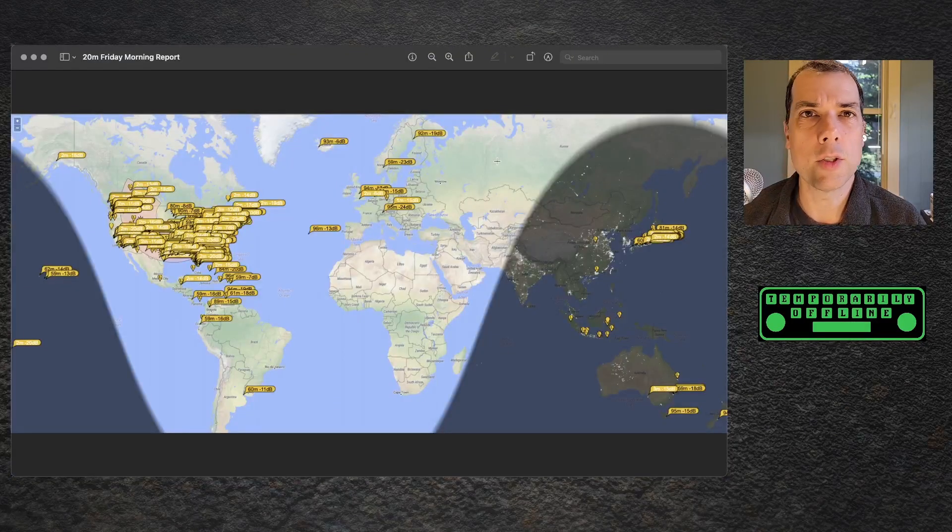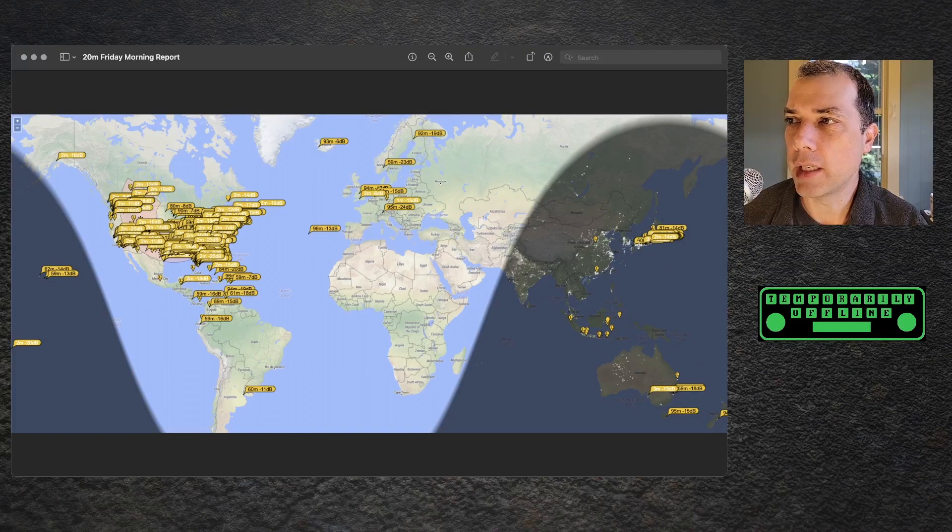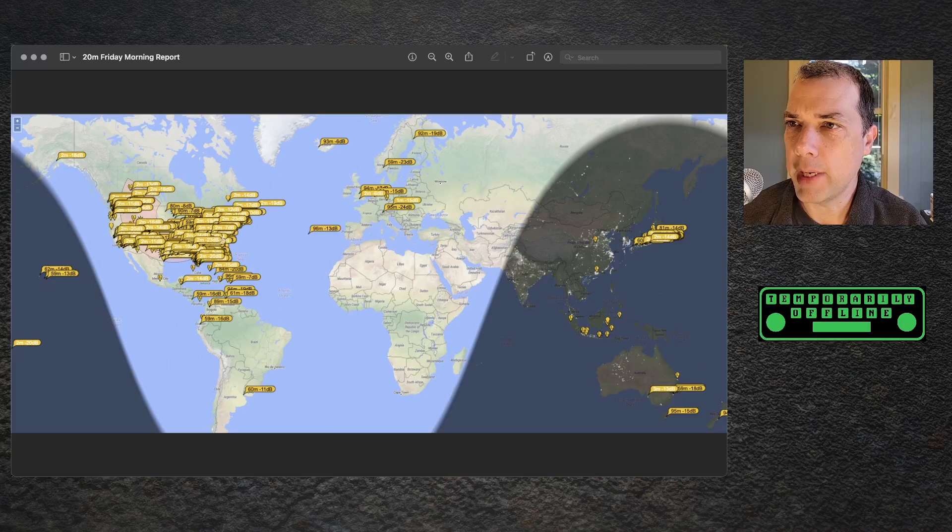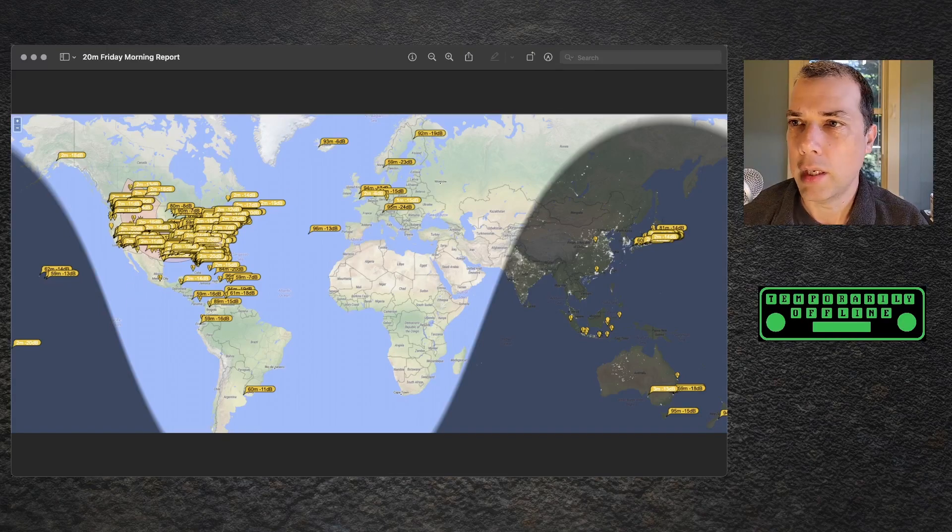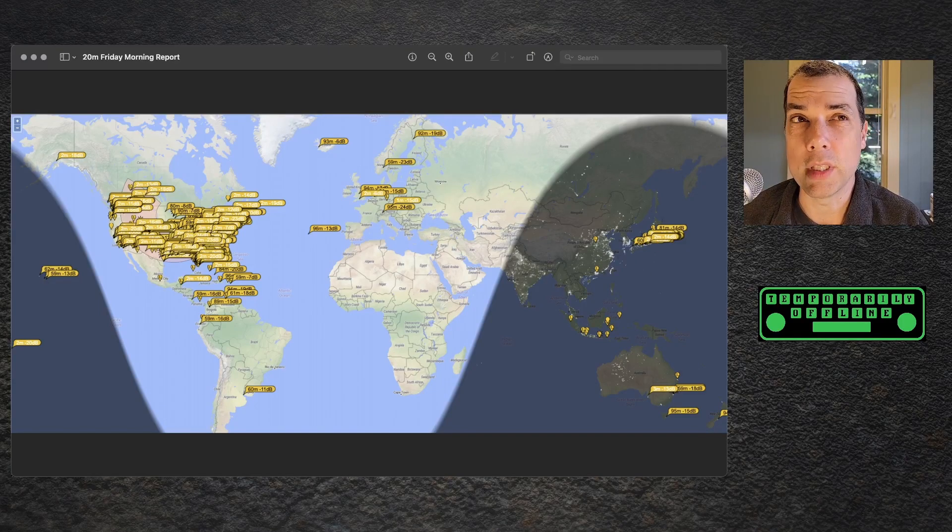This one's even more fun. This is 20-meter FT8 during the day on Friday. And you can see I've got a lot of propagation into Japan. And I've got that same pink blob action going on. Not as much into South America. Plenty into Europe. And, again, just tons of coverage all over the United States, as you'd expect. Let's look at some of these Japanese contacts in a little bit more detail, though, because that's pretty awesome.